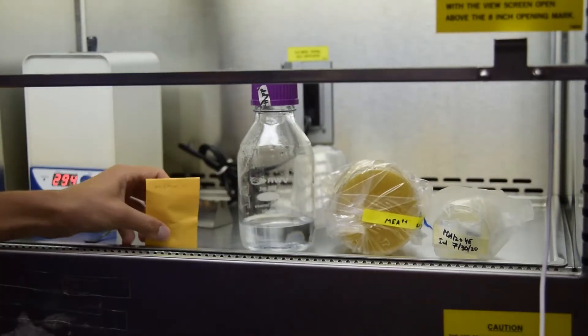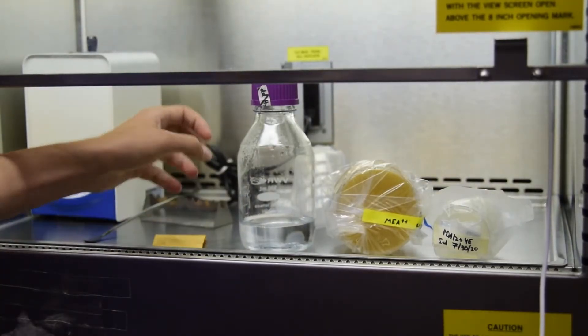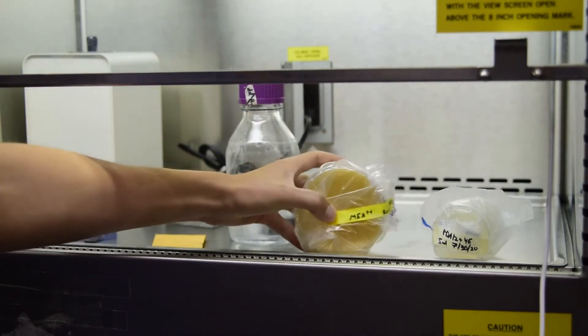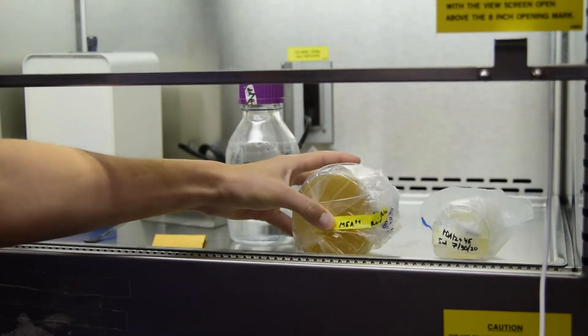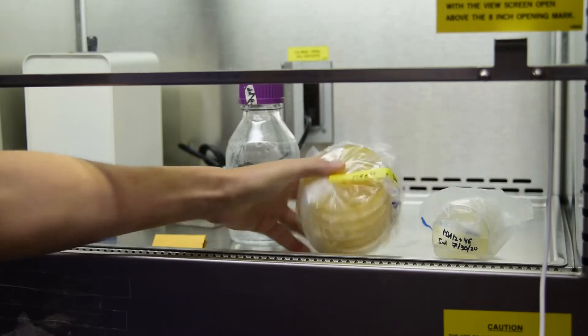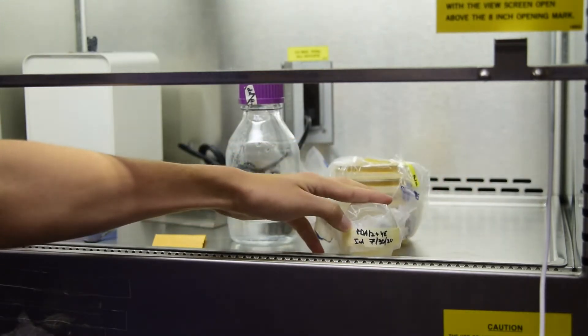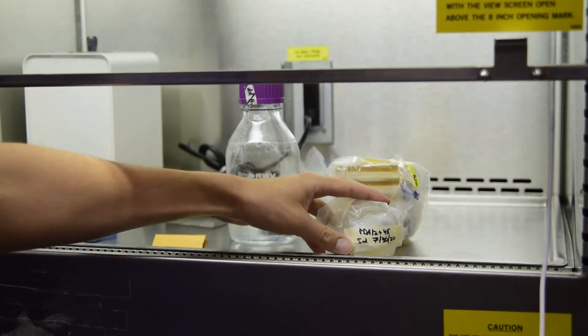You will need the soil or other substrate, sterile water, nutrient media on 100mm plates with antibiotics (the plus plus symbol), empty 60mm plates, and 60mm nutrient plates without antibiotics. Your hands should be washed and sprayed with ethanol.